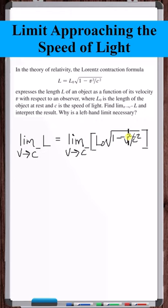So as V approaches C from the left, this V squared is approaching C squared. So that means that this entire term is approaching 1. So that means this square root is approaching 1 minus 1, which is 0. And 0 times L naught is 0, so this entire limit is approaching 0.